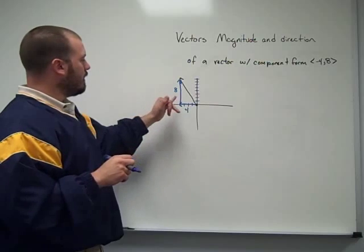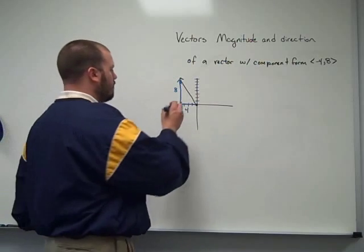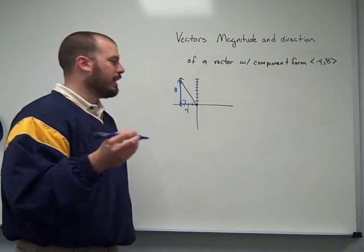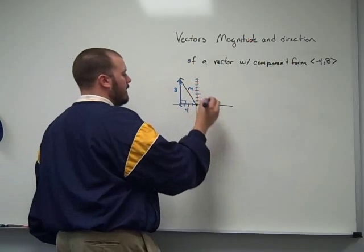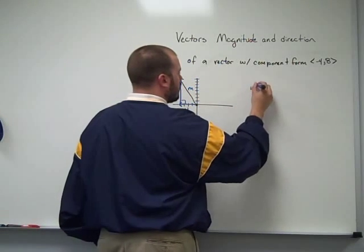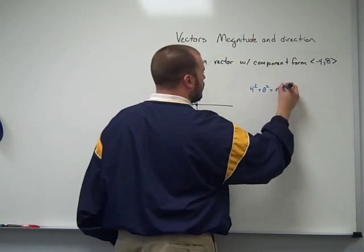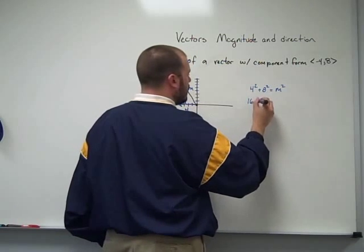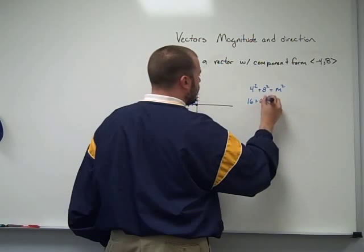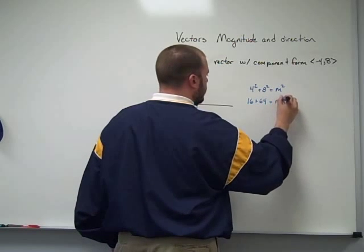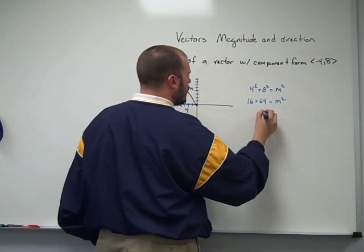And now, since the horizontal and vertical form a right angle, I can just use the Pythagorean theorem to find my magnitude. So 4 squared plus 8 squared is equal to the magnitude squared. 16 plus 64 is equal to the magnitude squared, and that would be 80.